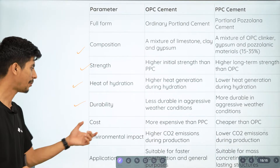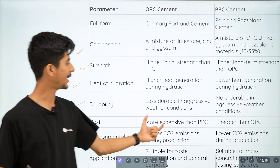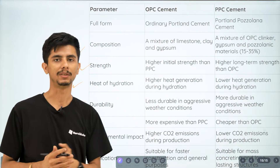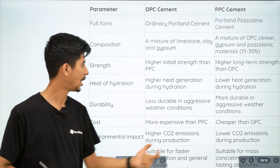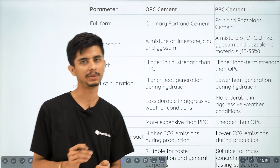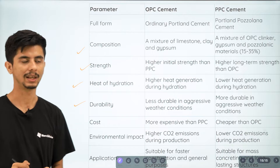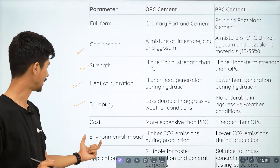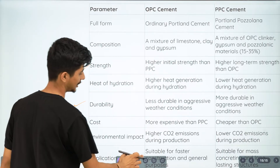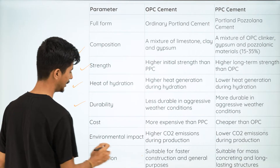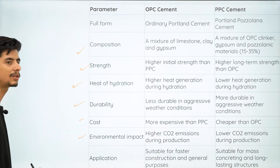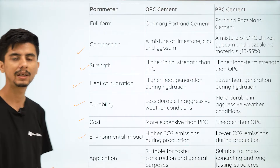Now let's look at cost. OPC cement is more expensive. PPC cement is cheaper.